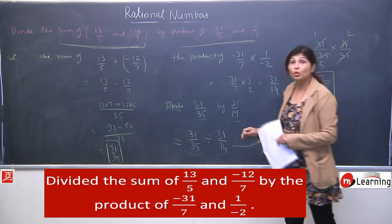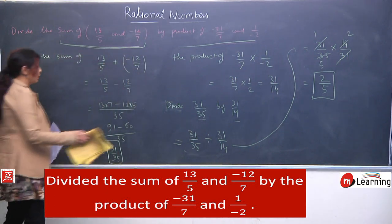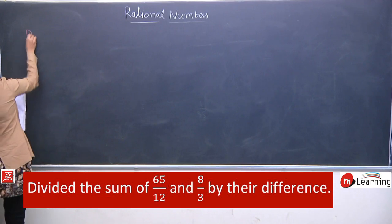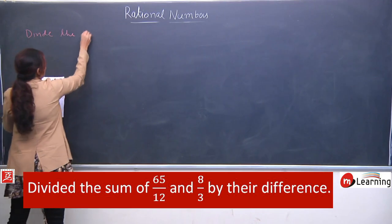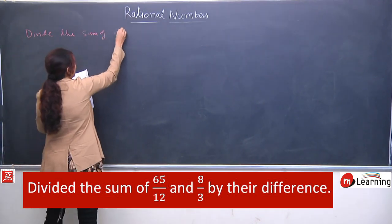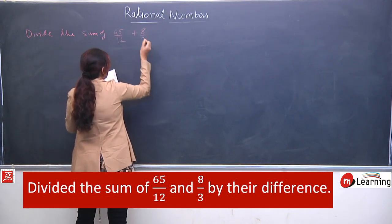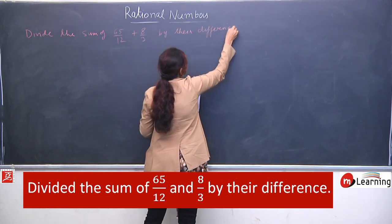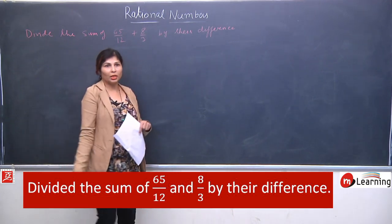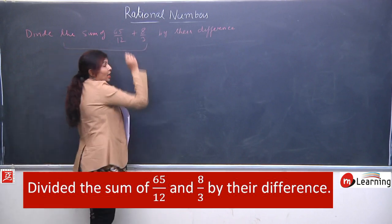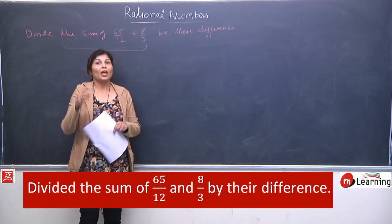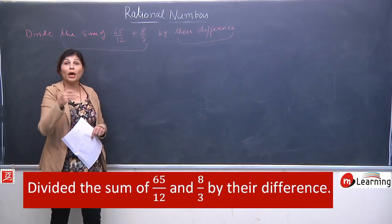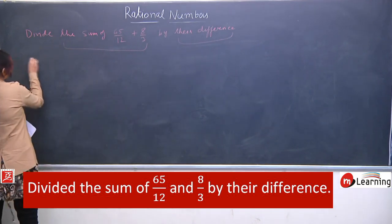It was very very important and good question for your examination purpose. Aap isko achhe se practice kariye. Isi pe based ek aur question man leti hoon jisse aap comfortably isko solve kar paayein. Now almost similar question: divide the sum of 65 by 12 plus 8 by 3 by their difference. Question ko bahut dhyan se observe kariye: divide the sum of this and this — toh hum in dono ka sum nikalenge, as well as their difference also we need to find.